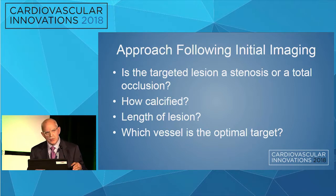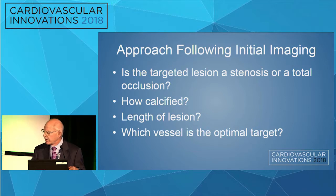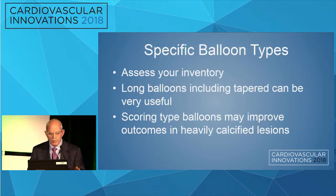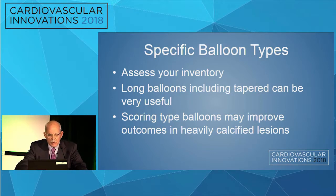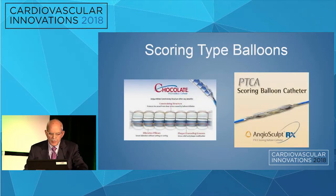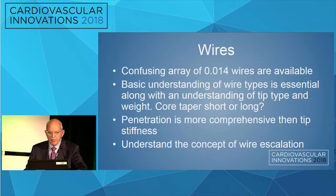You need to ask yourself: is the targeted lesion a stenosis or a total occlusion? How calcified is it? What's the length? Which vessel is the optimal target? I've gotten to a point pragmatically where I look at the vessel I think is going to be the easiest to fix and will provide the best perfusion to the foot. The angiosome concept is a nice one theoretically, but from a practical standpoint, go for what you think is the best artery you can open that will improve blood flow.